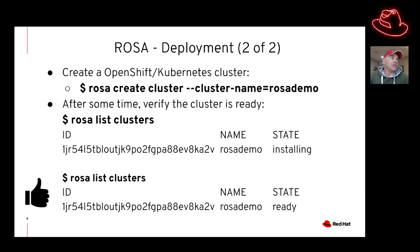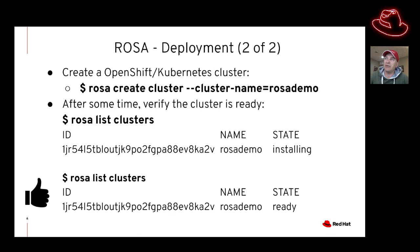To prepare the account, type 'ROSA init.' Once you've gotten this far, you can use the ROSA command to actually deploy a cluster. To do that, type 'ROSA create cluster --cluster-name' and then provide any name you like — I used 'rosa-demo.' After some time, you can type 'ROSA list clusters' and that'll show you the state of the cluster.